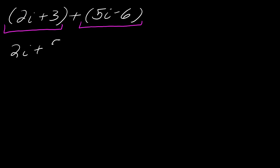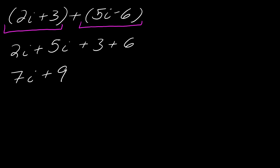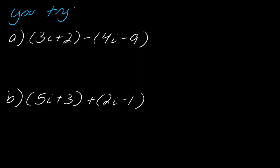You can go ahead and add the terms with the i's in them. So 5 plus 2 is 7, giving us 7i, and then 3 plus 6 is 9. That's pretty straightforward. Why don't you pause the video, give these two a try, and hit play when you're ready.